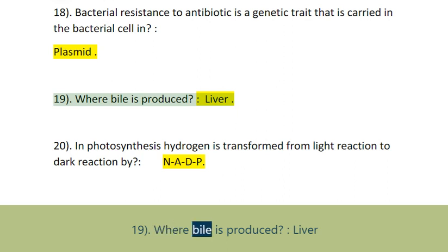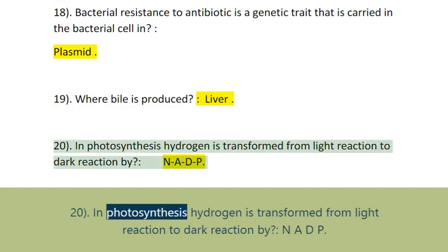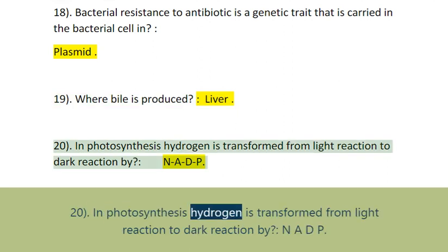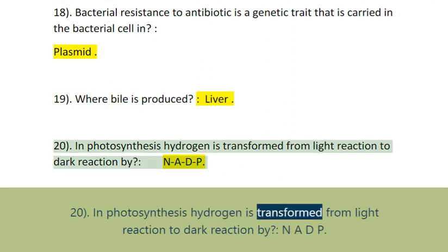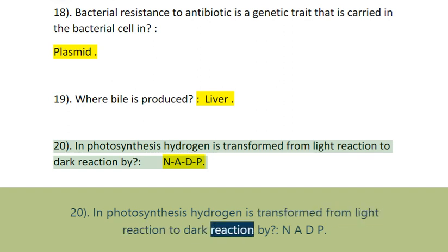Question 19: Where is bile produced? Liver. Question 20: In photosynthesis, hydrogen is transferred from the light reaction to the dark reaction by NADP.